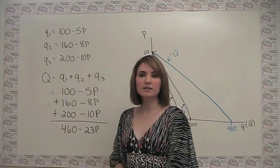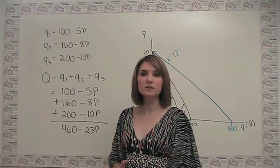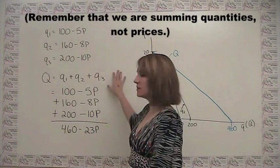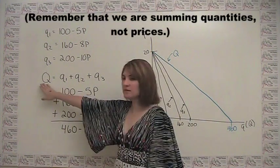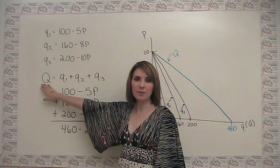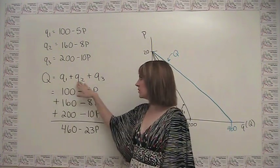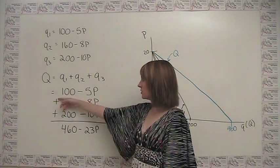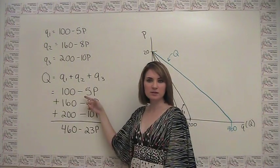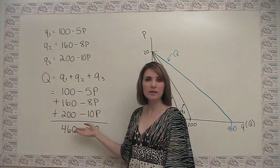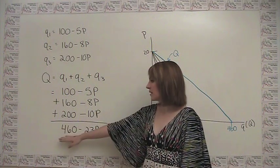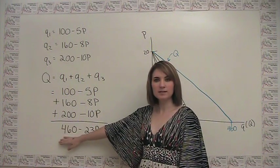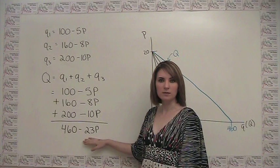Like I said, to get the market demand, we just sum up all the individual demands. You can see how we do that here. Let's say the market demand, represented by a capital Q, is just q1 plus q2 plus q3. Just plug in what that actually means in terms of price, and add them together, and we get that our market demand is equal to 460 minus 23p.